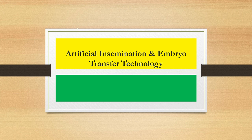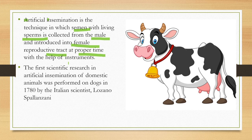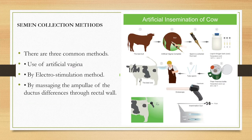Artificial insemination is a technique in which semen with living sperms is collected from the male and introduced into the female reproductive tract at a proper time with the help of instruments. This scientific research on artificial insemination in domestic animals was performed on dogs in 1780 by an Italian scientist.